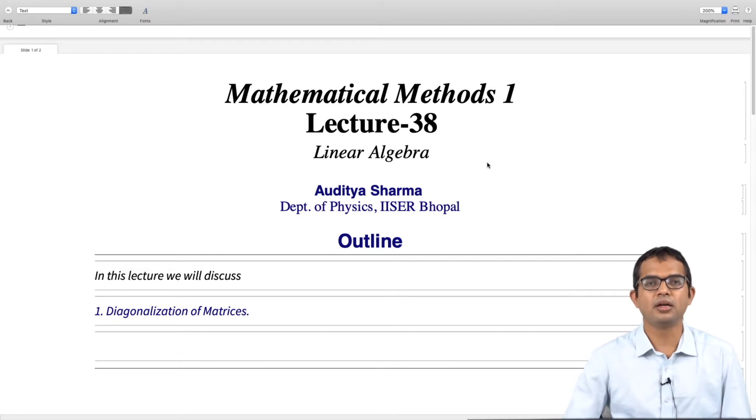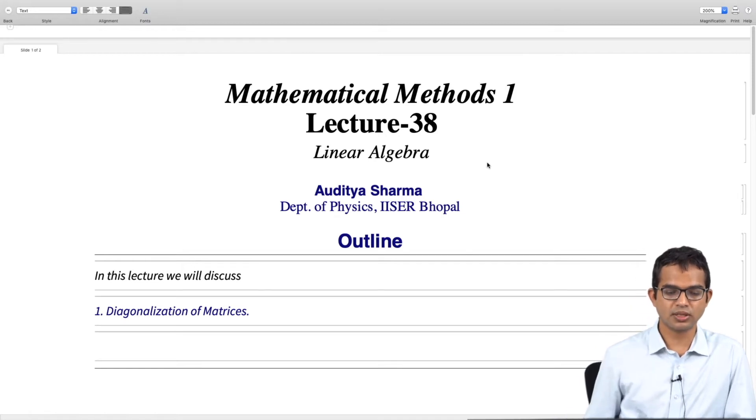So, we have seen similarity transformations. In this lecture, we look at a special kind of similarity transformation which takes a matrix and makes it diagonal. That goes by the name of diagonalization of matrices.